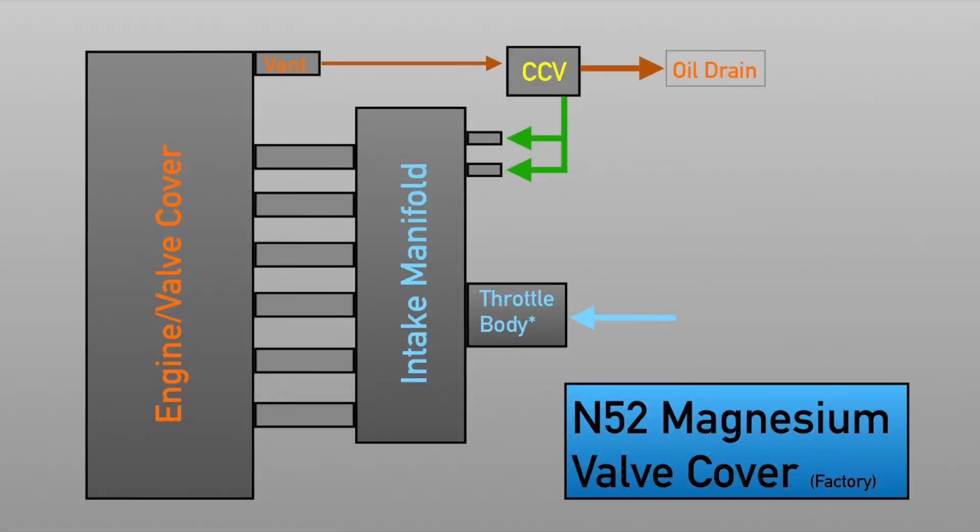Next is the factory setup for the magnesium valve cover. There is no internal baffling, and there is no internal separation of the air and oil. That goes straight to an external CCV system, not dissimilar to the system on the M54, but it is improved slightly.